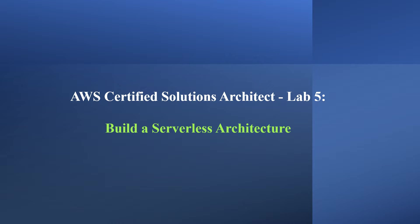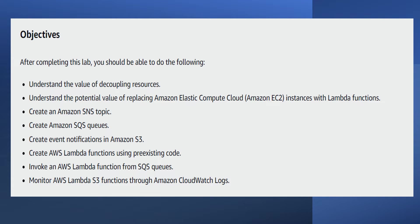We'll be covering the following objectives in this hands-on lab: understand the value of decoupling resources, understand the potential value of replacing Amazon EC2 instances with Lambda functions, create an Amazon SNS topic, create Amazon SQS queues, create event notifications in Amazon S3, create AWS Lambda functions using pre-existing code, invoke the AWS Lambda function from SQS queues, and monitor the AWS Lambda S3 function through CloudWatch logs.